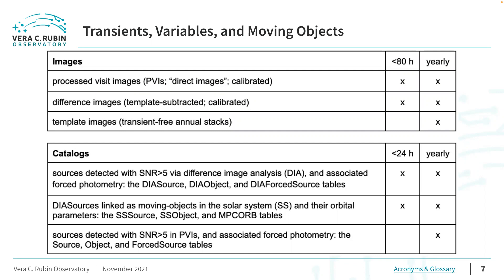Note that Rubin Observatory uses the term "source" to refer to a detection in a single image, and the term "object" to refer to sources associated by sky location. Aside from the DIA source and DIA object catalogs, forced photometry at the location of all DIA objects in all difference images will be stored in the DIA forced source catalog. The catalogs most relevant to the study of moving objects in the solar system will be the SS source, SS object, and MPC orb catalogs. The SS source and SS object catalogs will contain measurements for detections of solar system objects in the difference images, and the MPC orb catalog will contain derived orbital parameters from the Minor Planet Center.